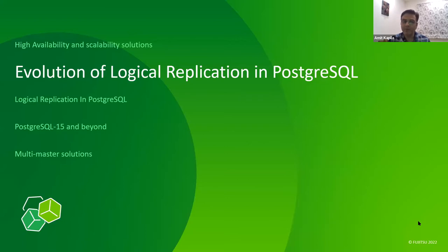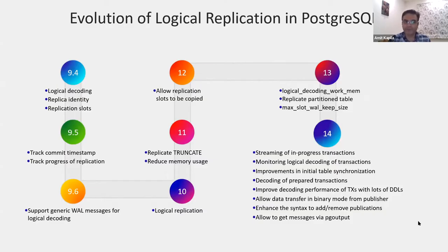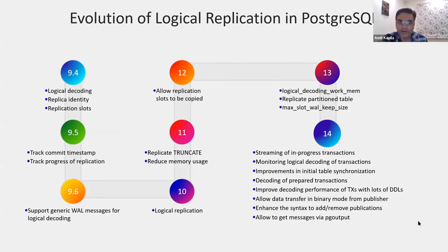Now I will briefly talk about how the logical replication solution has evolved in PostgreSQL through various releases. The foundational features for logical replication started to mature in version 9.4, where we added logical decoding, which is the backbone for the whole logical replication system. This is the solution which allows the raw WAL data to be decoded in a form that can be sent to another server in SQL form. To support it, we introduced replica identity and replication slots in PostgreSQL 9.4.